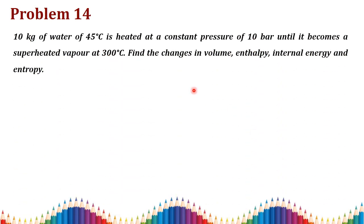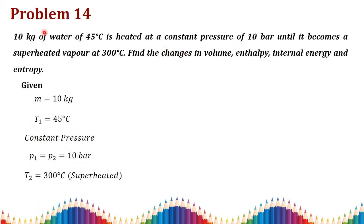Problem 14: 10 kg of water at 45°C is heated at a constant pressure of 10 bar — so p1 equals p2 equals 10 bar — until it becomes superheated vapor at 300°C. So the initial condition is water (liquid) and the final condition is superheated steam. We need to find the change in volume, enthalpy, internal energy, and entropy: ΔV, ΔH, ΔU, and ΔS.